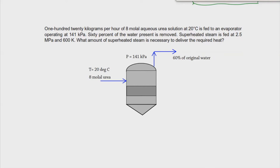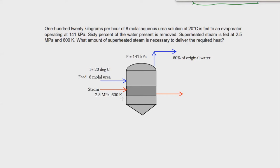Superheated steam is fed at 2.5 megapascal, 600 kelvin. This 2.5 megapascal and 600 kelvin actually give the state of our steam — that's why it is called superheated, because the pressure and the temperature are given at the same time.